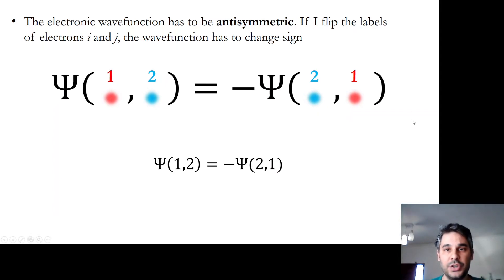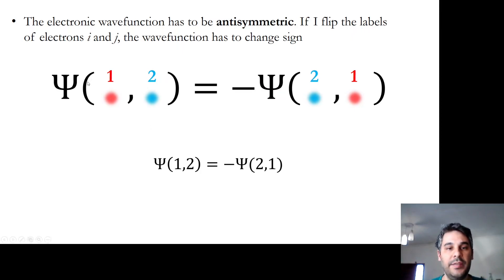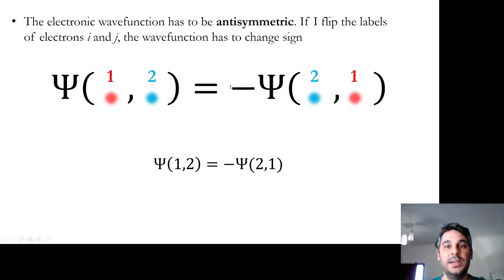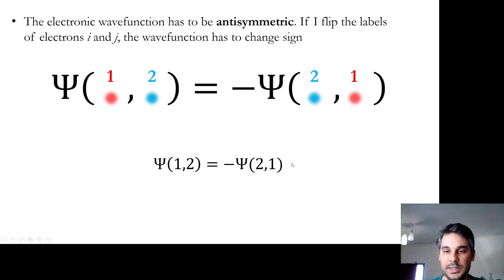The electronic wave function has to be anti-symmetric. This means that if you flip the labels of two electrons, the wave function has to change sign. This is evidenced by the notation that says if particle 1 and 2 are flipped in the wave function, the wave function has to be multiplied by minus 1. The notation below is the same thing.